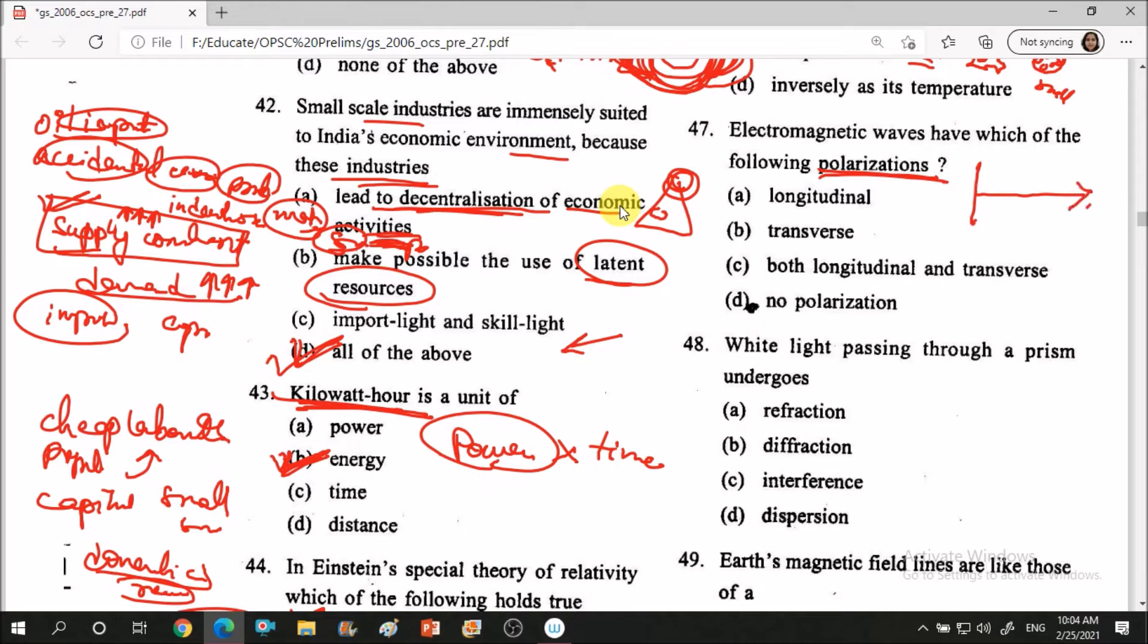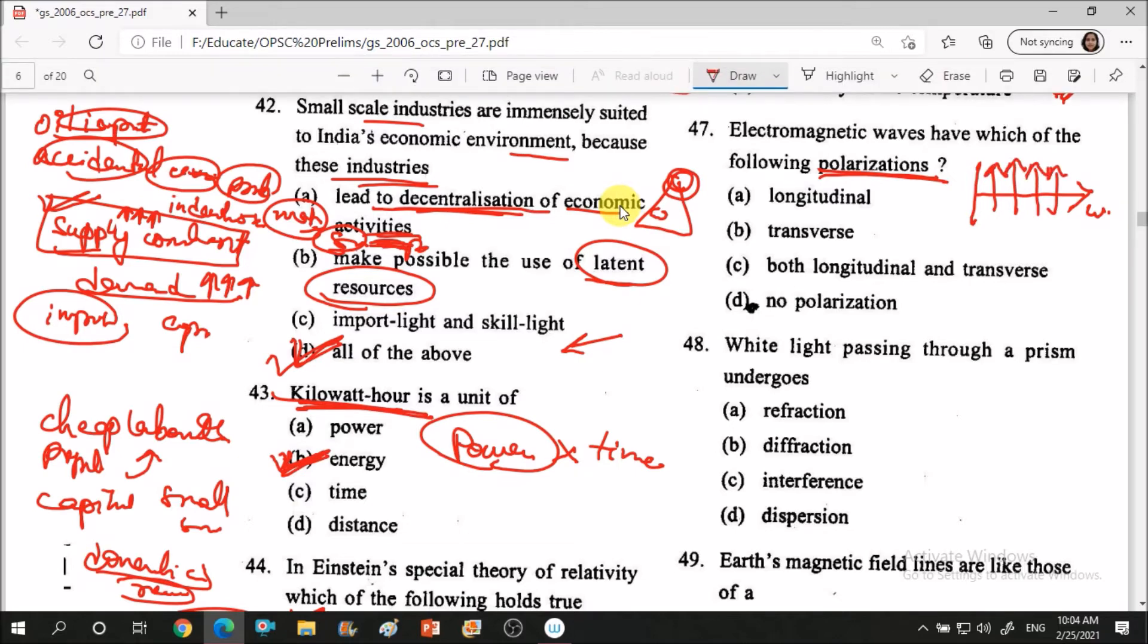So waves move in one direction. Polarization is in another direction. The molecules are vibrating, maybe in up-down direction, but wave is transmitted like this. So polarization will be transverse. Suppose molecule's wave, the molecules are vibrating in this direction, but wave is also going in this direction.